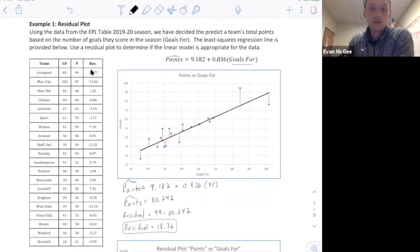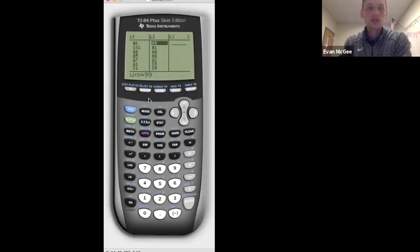So what I've done is I've put the residuals for each team in the data table. And to make the residual plot, we're going to have to plot all of these with their number of goals scored. So I'm going to show you how to do this in your calculator. I'll open that up and put the goals for in list one, and I'm going to put the points scored in list two. So I've entered the number of goals they scored in list one, and the response variable number of points total in list two.